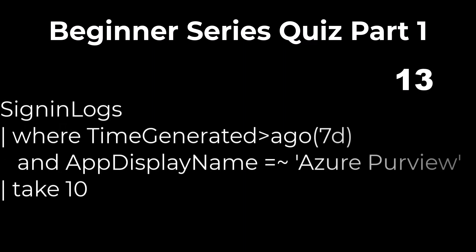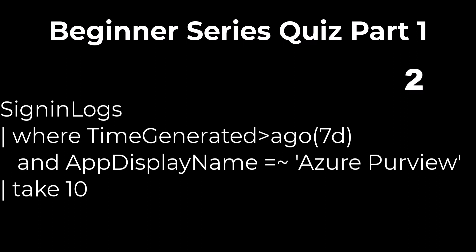Problem 11: The following query will produce the 10 most recent records. When we want to find the most recent records, we can use top and sort by the time generated field. Take produces 10 random records and the answer is false.